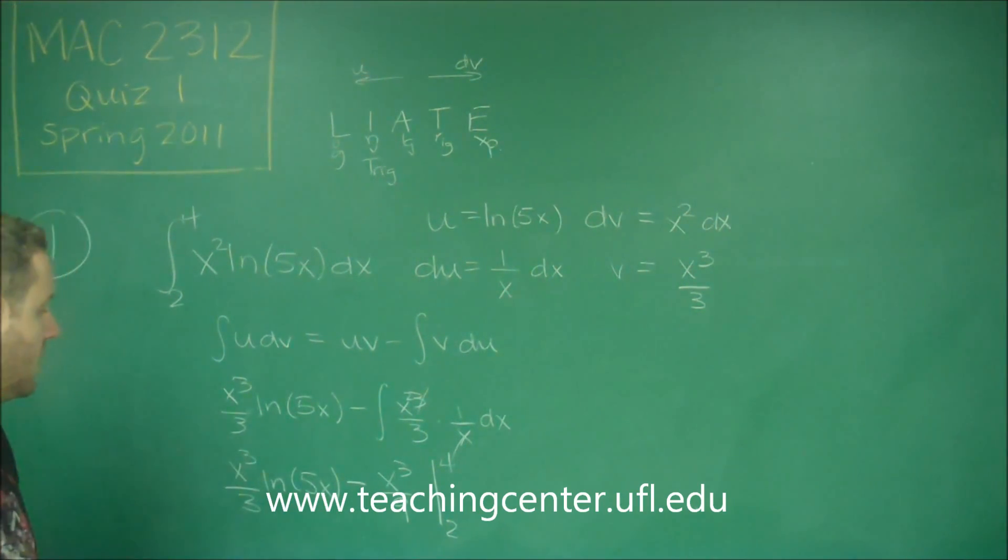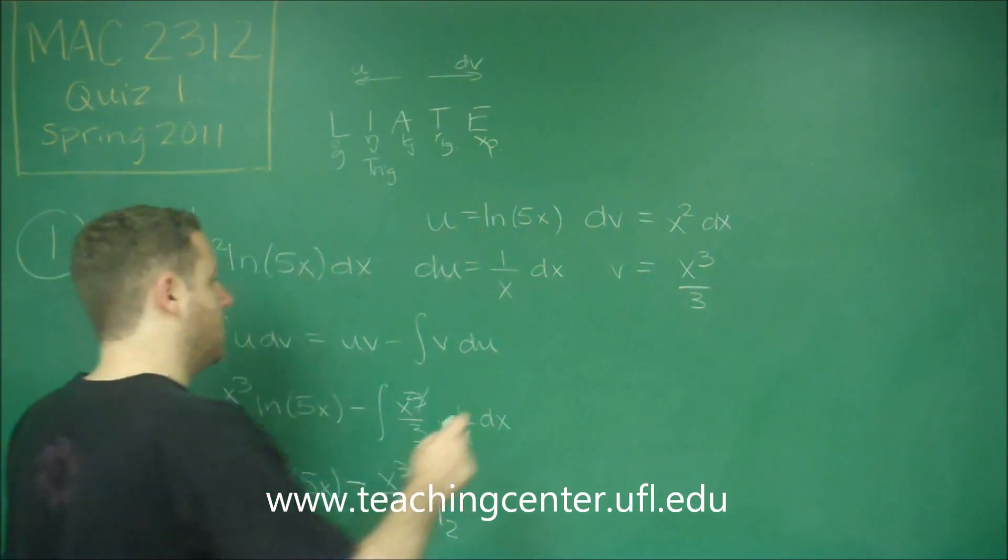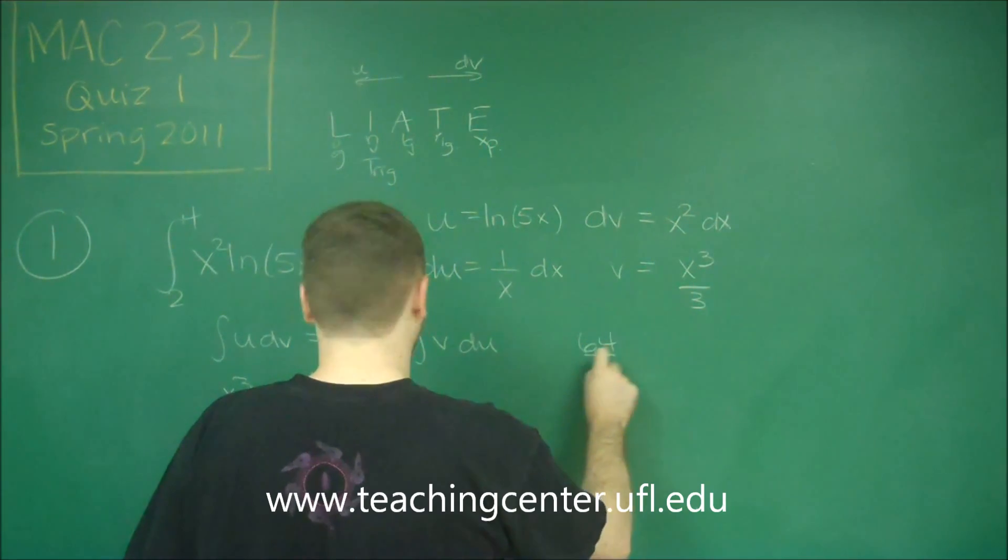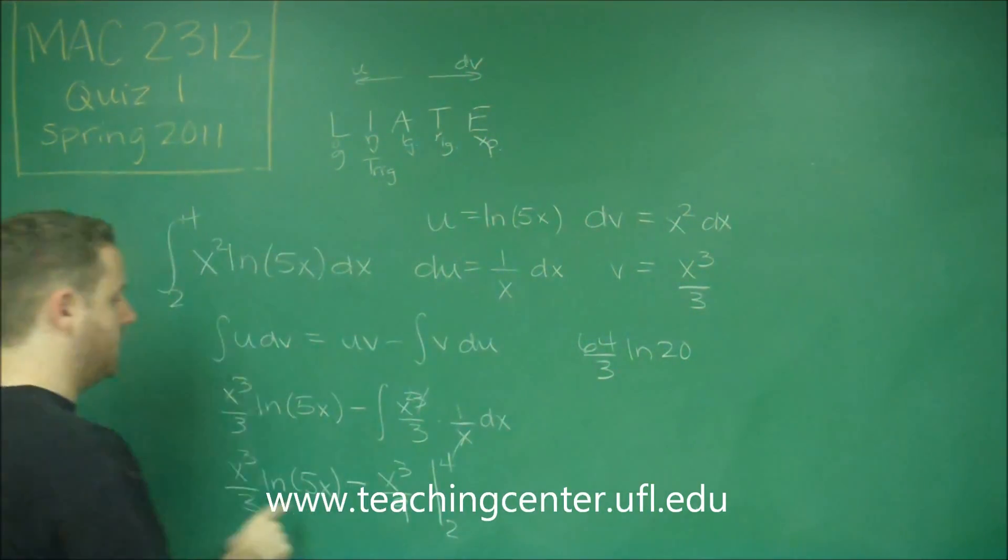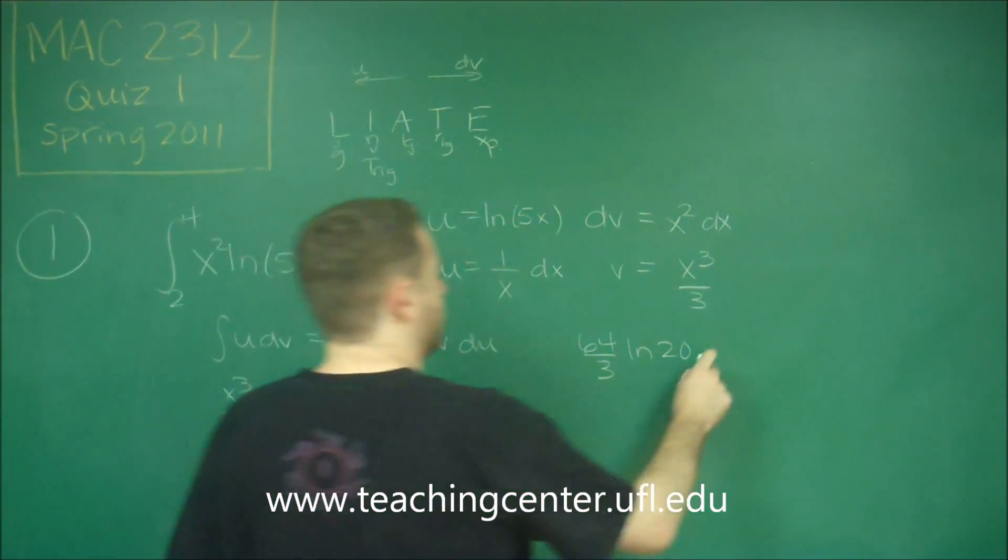If you plug in 4 here, 4 cubed is going to be 64. So we get 64 over 3, ln 20. We get 5 times 4 in there. Minus 64 over 9.